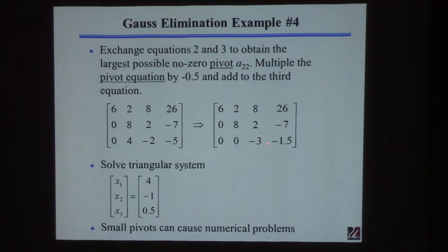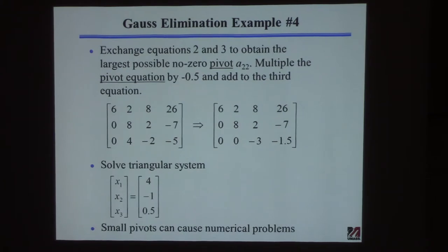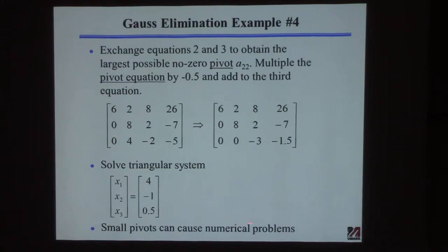So I'm trying to rearrange these rows when I do these operations so the pivot — what I'm going to multiply to make other elements zero — is as large as possible. Now I've got this. I'm going to multiply this times minus one-half and add it to this row, and I'll get that. And now it's triangular. For example, this equation is minus three x3 equals minus three halves, and that equals 0.5. Once you get a triangular system, it's easy to solve.